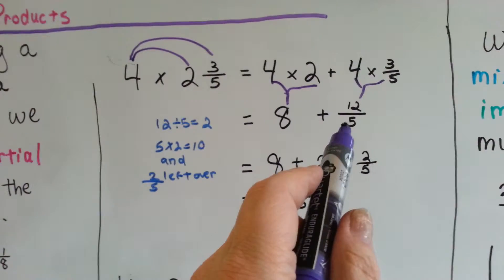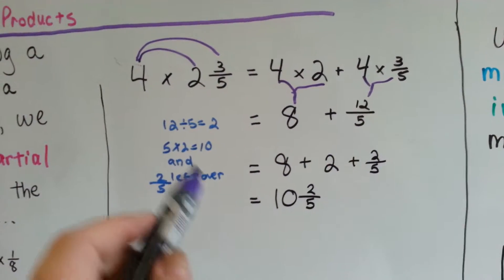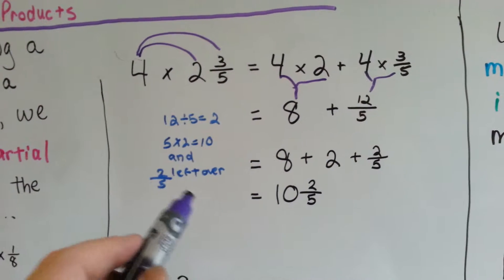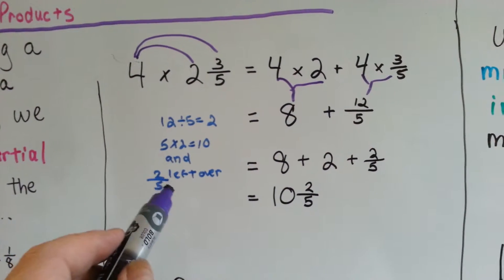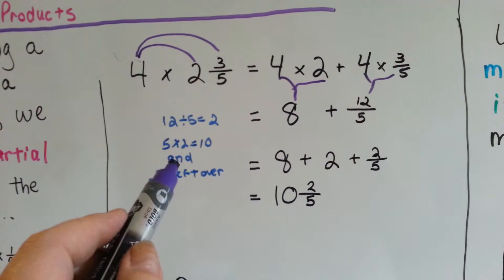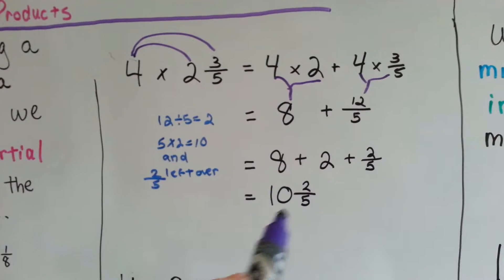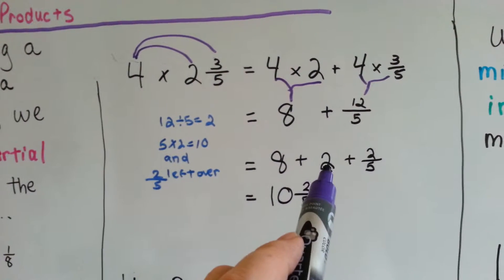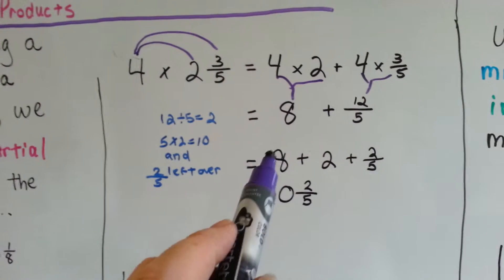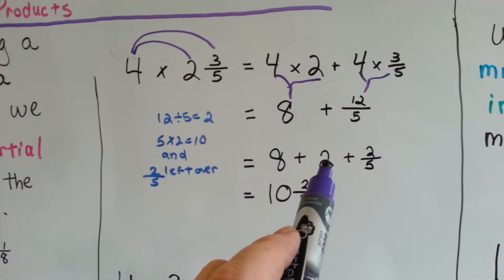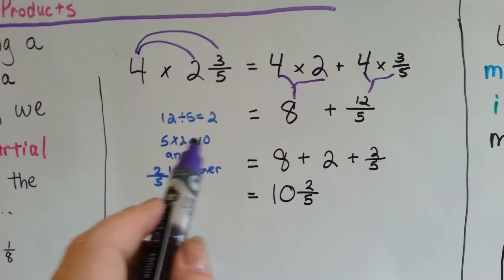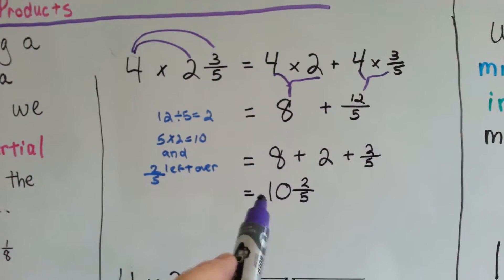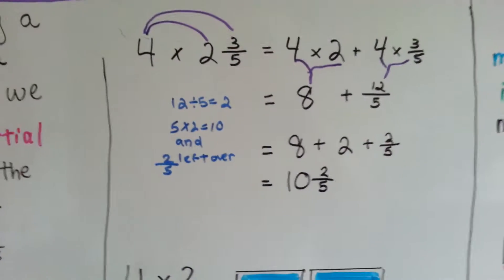We ask how many times 5 fits into 12. 12 divided by 5 is 2, with a little 2 fifths left over — because 5 times 2 is 10, then 11, 12. So we've got 2 fifths left over and 2 whole. We add 8 plus 2 whole from the conversion, then add the 2 fifths, and we get 10 and 2 fifths.